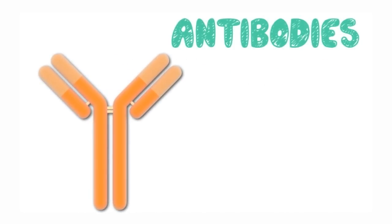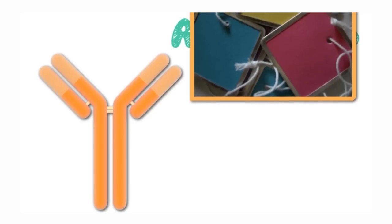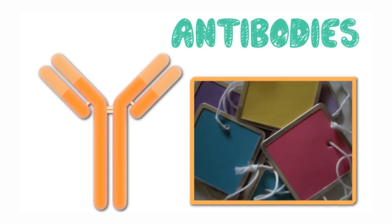Moving on, I want to clearly help you visualize what antibodies do in your body. As mentioned, they work as devices in your immune system that help detect something, and the way they do so is through tagging. They are great tags that will tag the bad guys in your body and then help the immune system take care of them.